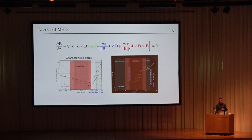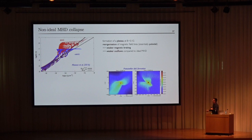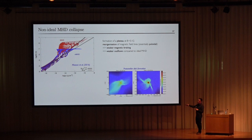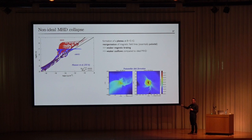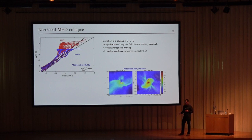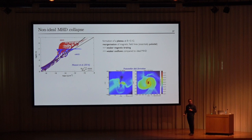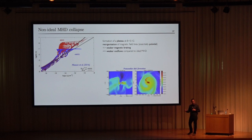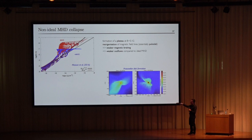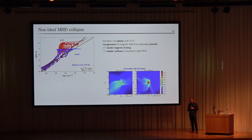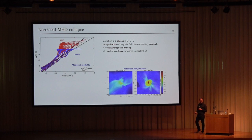If non-ideal MHD is included in a collapse model — similar to where the magnetic braking catastrophe occurred — what happens? The magnetic field as a function of density shows that in ideal MHD, the field is amplified with density because magnetic flux is frozen. But with non-ideal MHD (here ambipolar diffusion only), there is a plateau at about 0.1 Gauss and no further amplification in the central part. Ambipolar diffusion dominates, preventing further magnetic field accumulation. The field gets weaker and rearranged to be essentially poloidal/vertical, which weakens magnetic braking and allows disks to form. Disks are back.